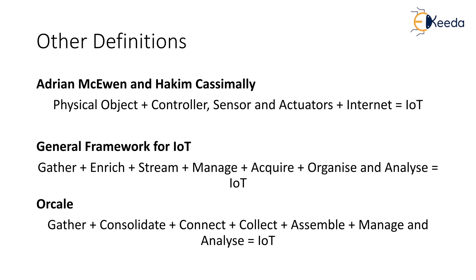In this definition, the physical object and controller — the device — is the level one data, which uses sensors to gather pre-data. The sensor is connected to a gateway. Generally, IoT consists of an inter-network of devices and physical objects where a number of objects can gather data at remote locations and communicate to units managing, acquiring, organizing, and analyzing the data.